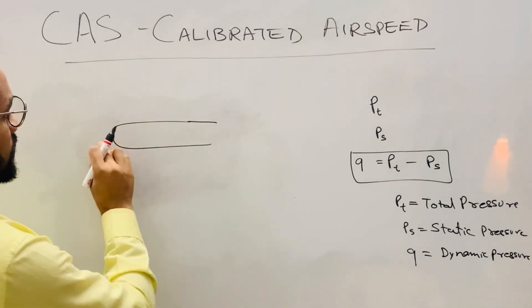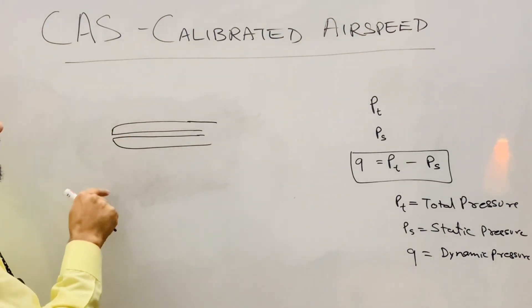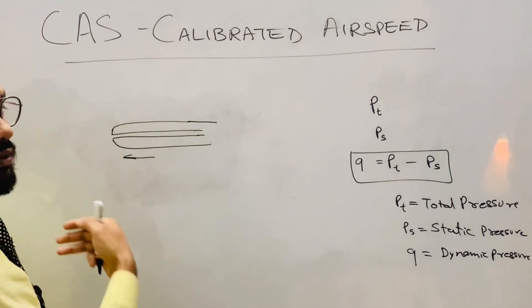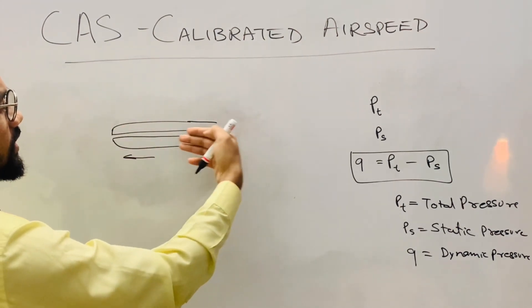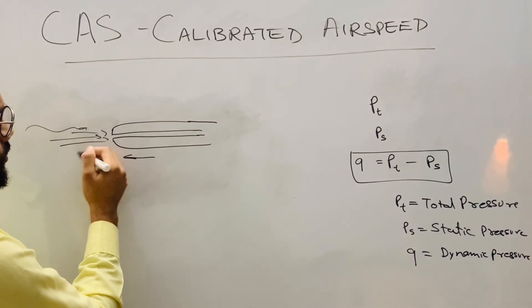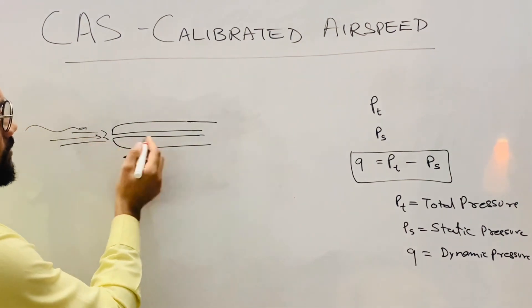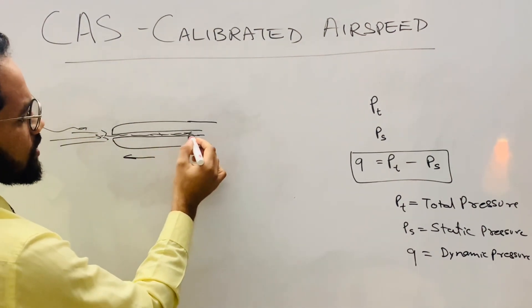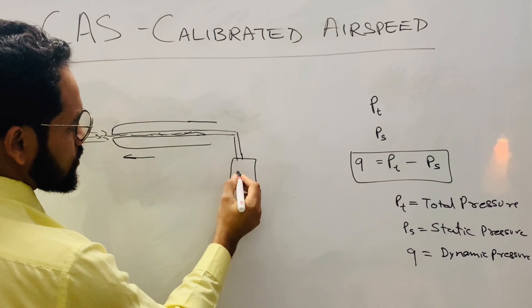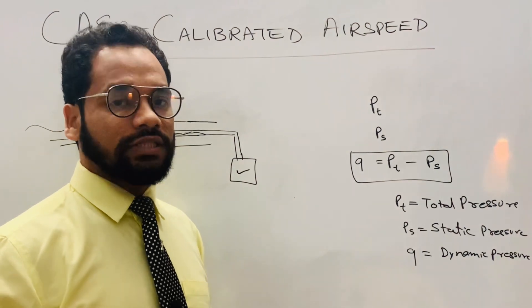This is how a PTOT probe looks — a small tube. Whenever the aircraft is in motion, with forward motion, whatever airflow is there will have some impact on this probe. That pressure on impact is called the impact pressure. That impact pressure is sensed by this probe and given to a transducer, which will sense this impact pressure.